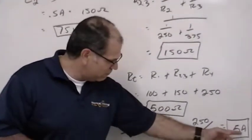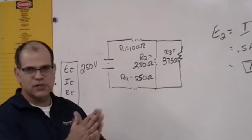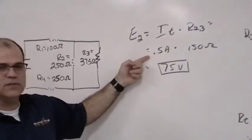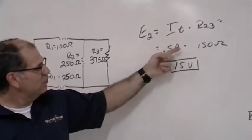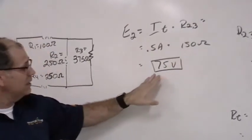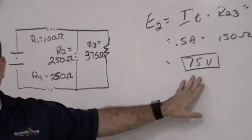This same 0.5 amps is the same current that flows through both of these two resistors combined together. So, all I have to do is take the total current, 0.5 amps, multiply it by the reciprocal value of 2 and 3 of 150, and that gives me a voltage drop across two of 75 volts.